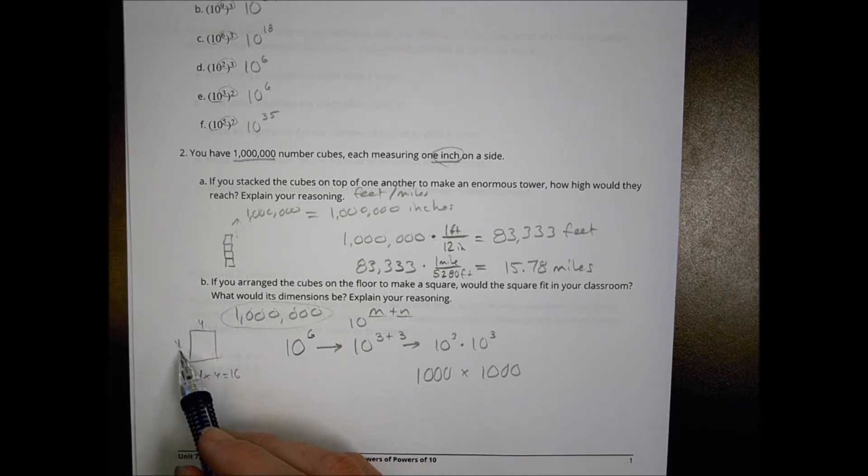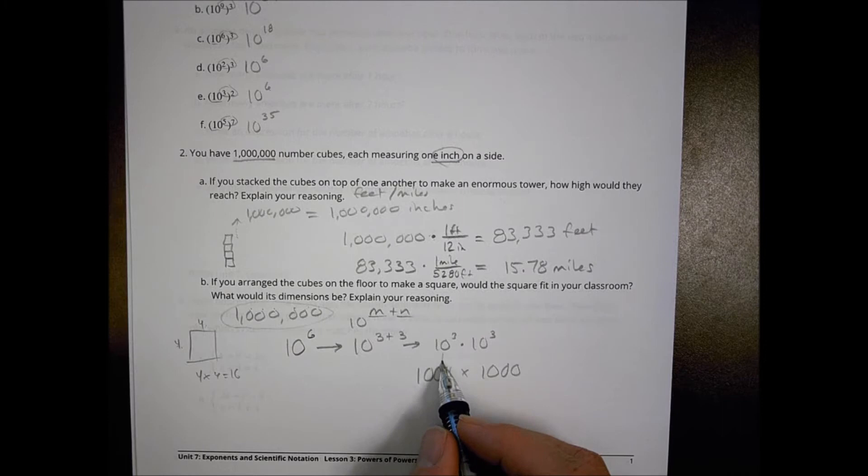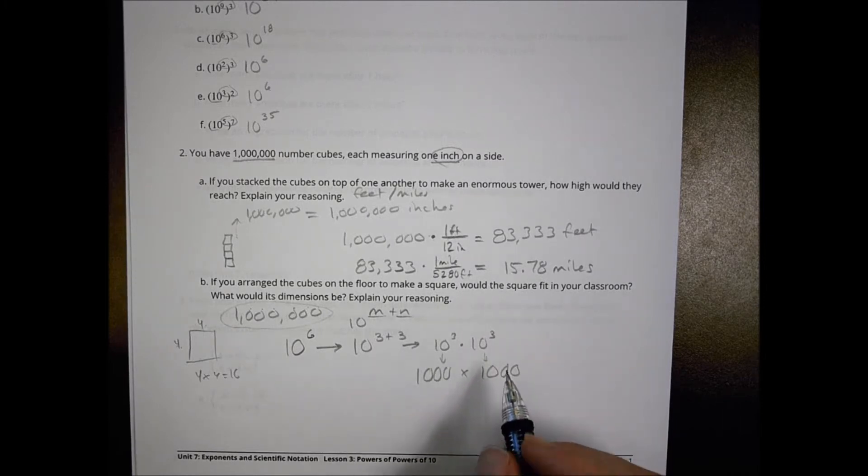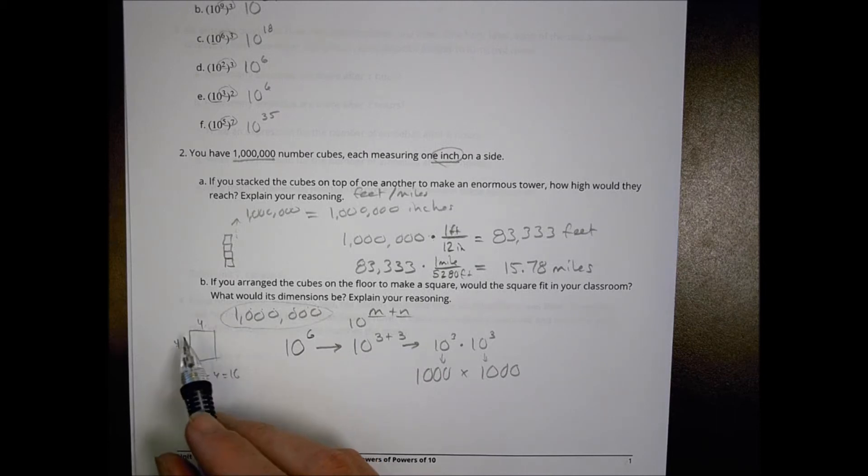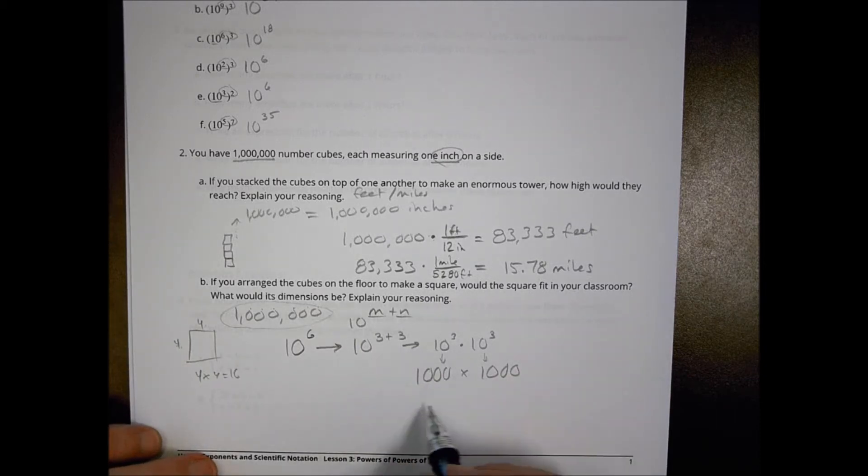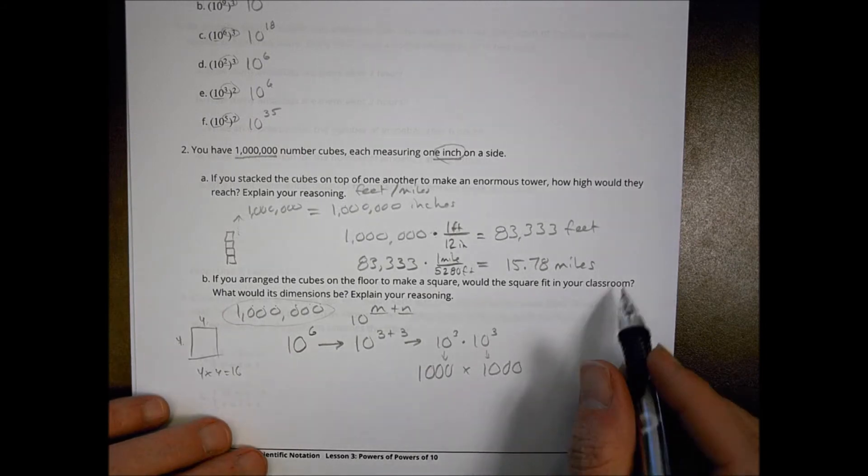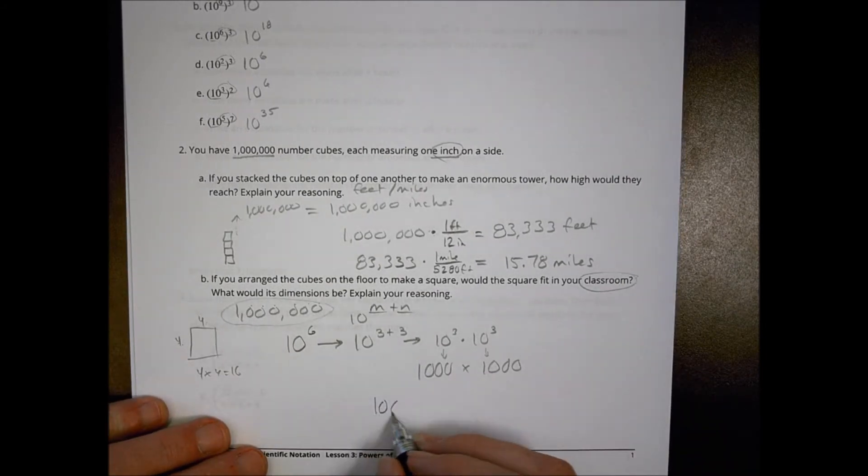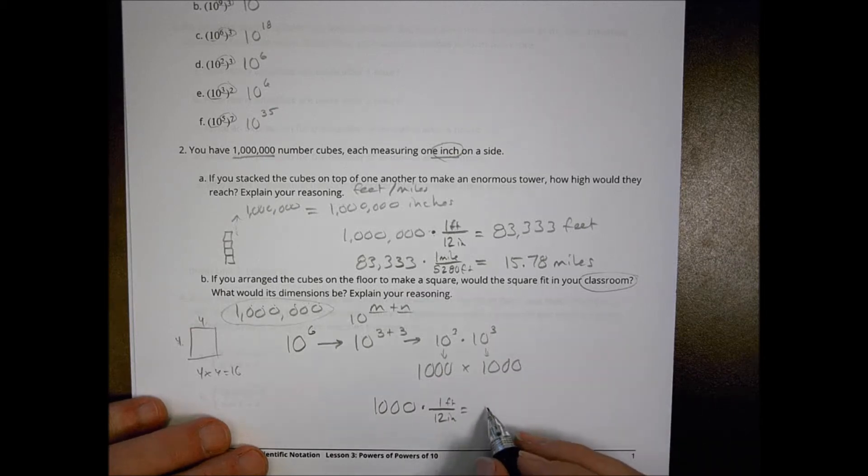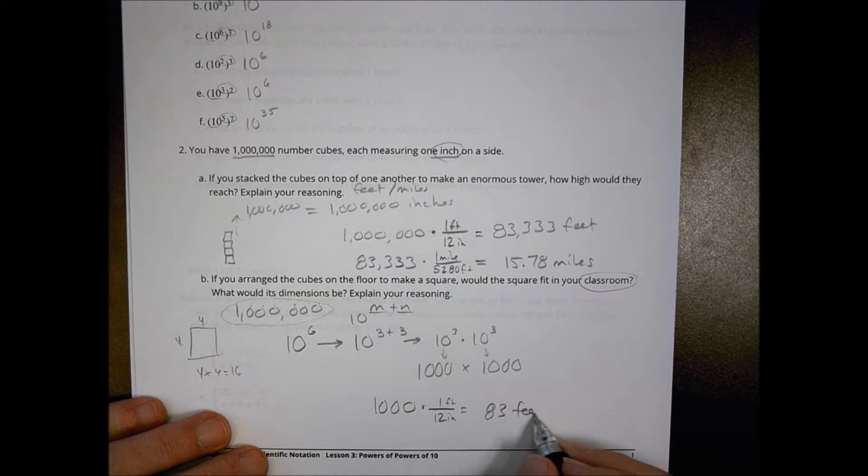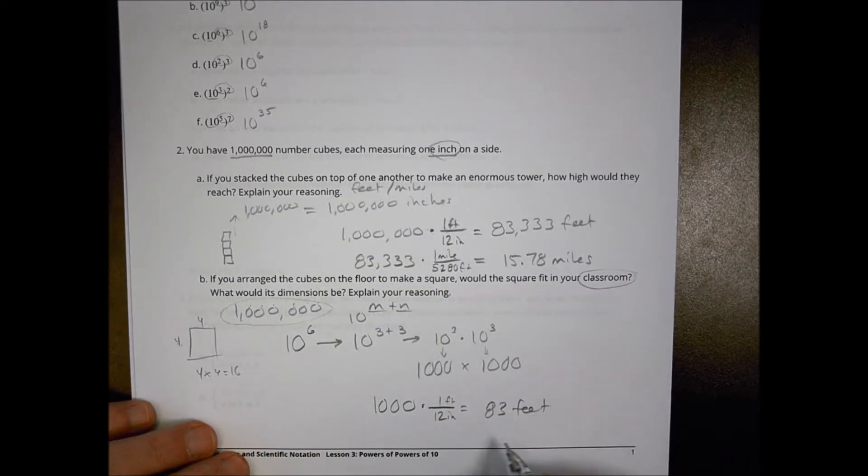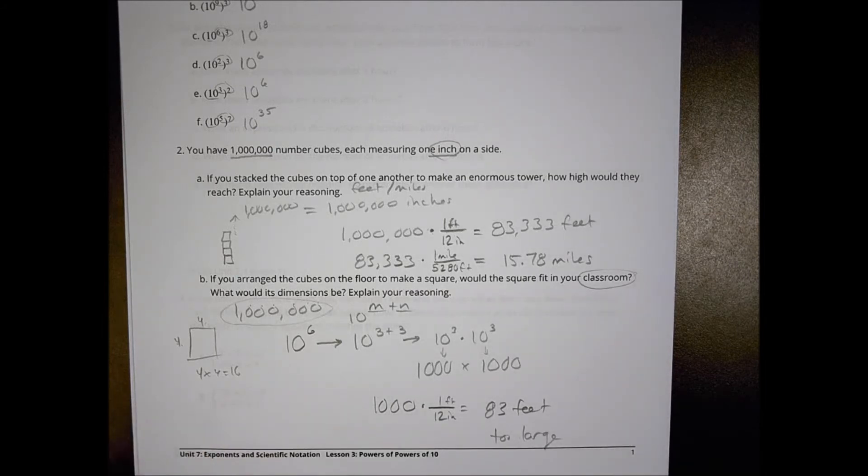As 10 to the 3rd, I can rewrite that as 10 with three zeros times 1,000. So the square of the cubes would be 1,000 inches by 1,000 inches. Let me convert this by multiplying it by 1 foot over 12 inches. 1,000 divided by 12 is equal to about 83 feet. 83 feet is a little bit too large for a classroom. Most classrooms aren't 83 feet long. So we would probably say it wouldn't fit.